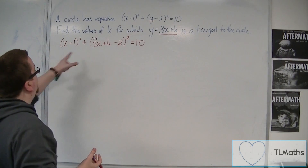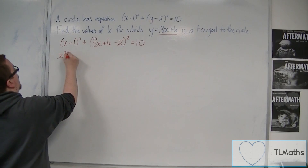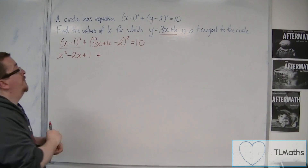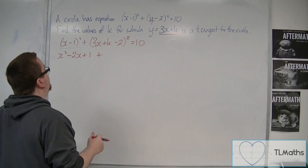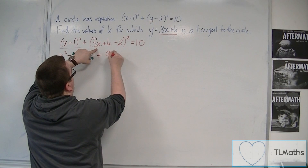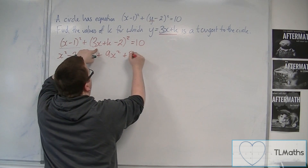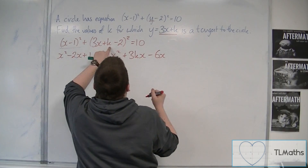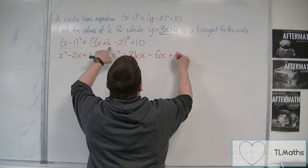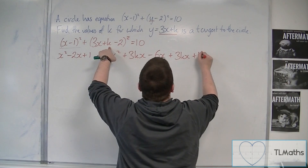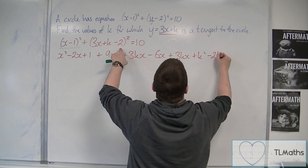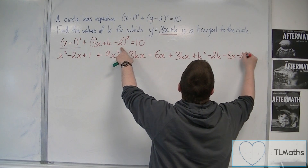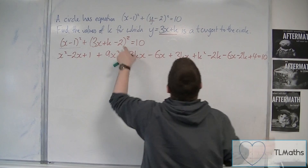We now need to expand both brackets. From the first bracket we get x squared minus 2x plus 1. For the second bracket, multiplying everything by everything: 3x times 3x gives 9x squared; 3x times k gives 3kx; 3x times minus 2 gives minus 6x. Then k times each term: another 3kx, k squared, and minus 2k. Then minus 2 times each term: minus 6x, minus 2k, plus 4. This all equals 10.